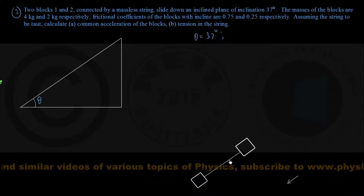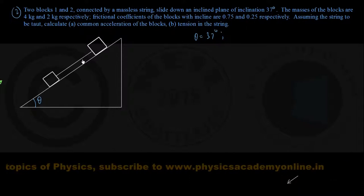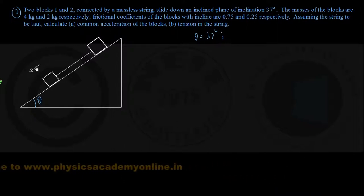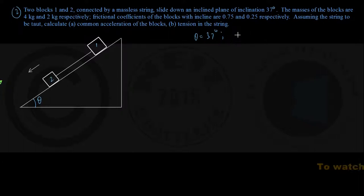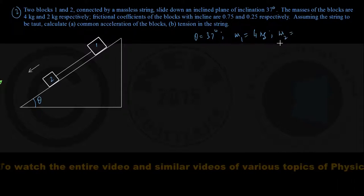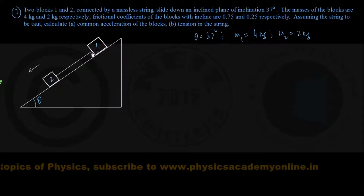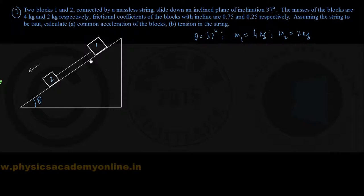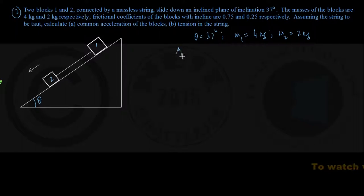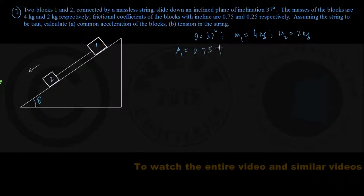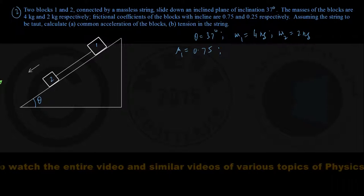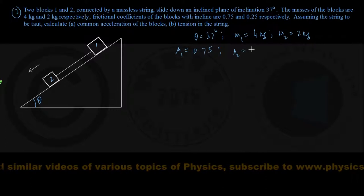There are two blocks connected by a massless taut string, sliding down the incline. Let me call the blocks 1 and 2. The mass of block 1, M1, is 4 kg, and the mass of block 2, M2, is 2 kg. Since both blocks are in sliding motion, the coefficient of kinetic friction between block 1 and the incline is μ1 = 0.75, and between block 2 and the incline, μ2 = 0.25.